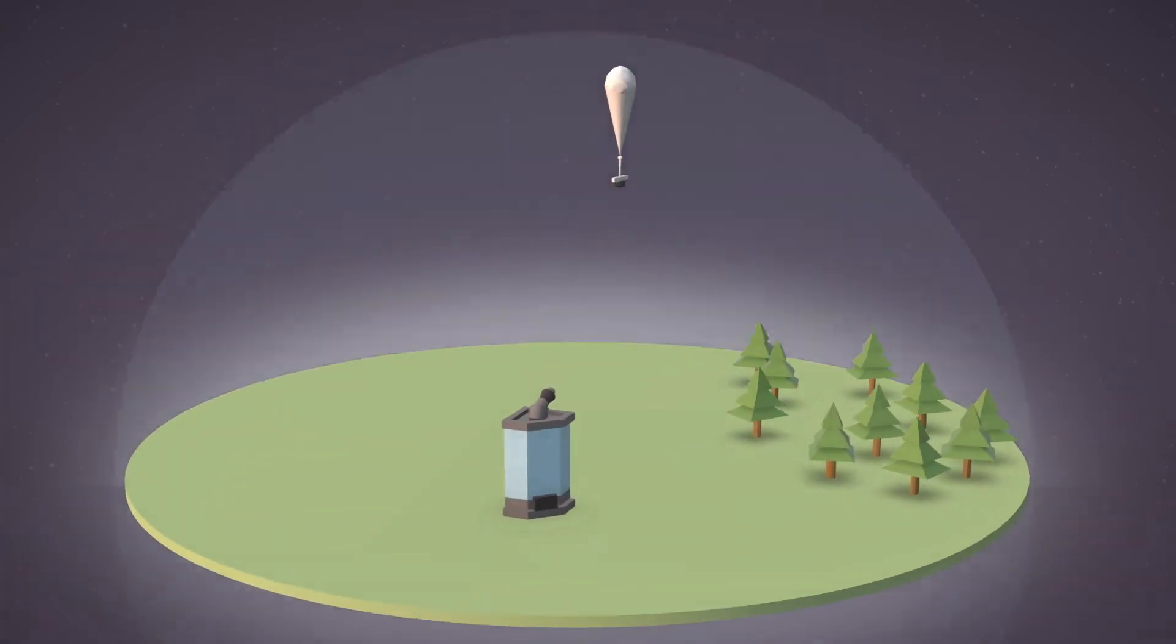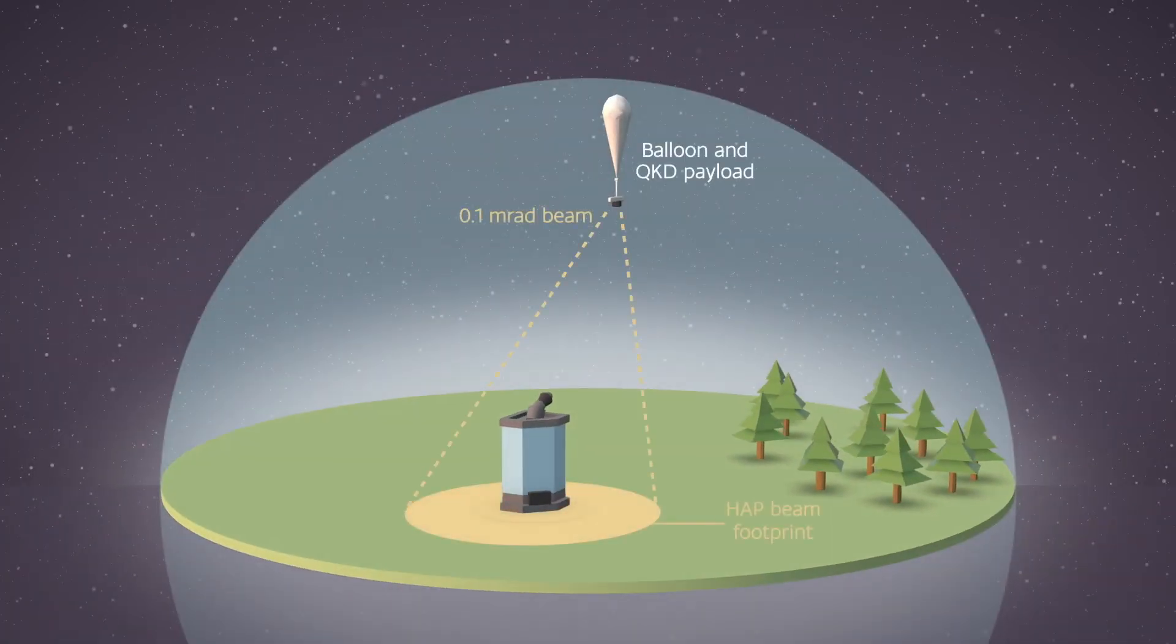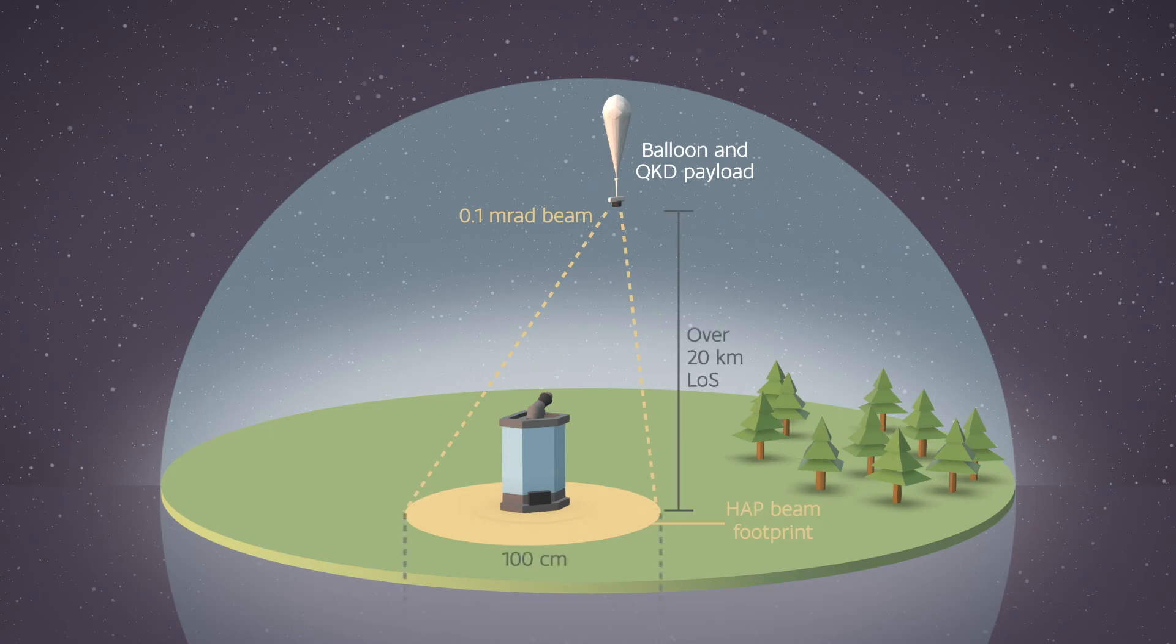Assuming a light source with 0.1 mR divergence is carried by the hap, after 20 km of propagation the beam lands on the ground with a 100 cm diameter footprint, compared with the 20 cm receiver telescope aperture.